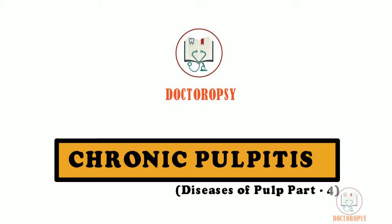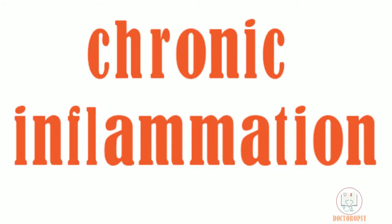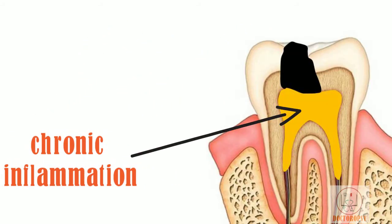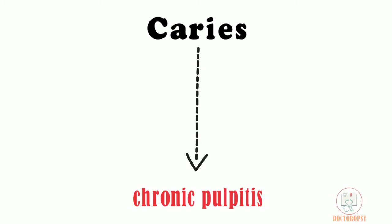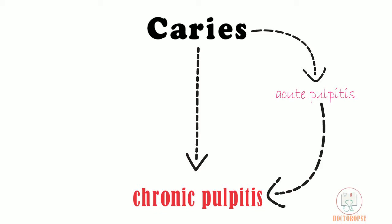Chronic pulpitis shows features of chronic inflammation in the pulp. Dental caries may give rise to chronic pulpitis directly, or may first lead to acute pulpitis which then transforms into chronic pulpitis.